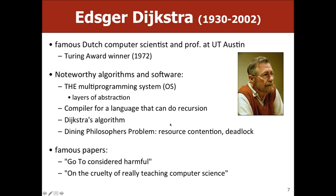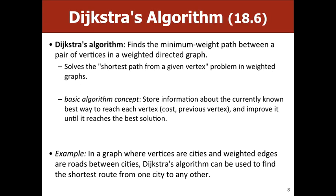Dijkstra came up with an algorithm that fixed this problem. He's a big deal in computer science — he won the Turing Award, which is like the Nobel Prize for CS. A fun anecdote: his name contains I, J, K, which is supposedly why loop counters in CS start with i, j, k. He developed an algorithm to find the minimum weight path between a pair of vertices in a weighted directed graph.